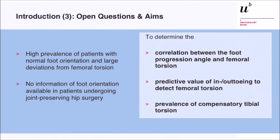We observed a high prevalence of patients with normal foot orientation but large deviations in femoral torsion in our outpatient clinic, and we could not find any reliable information on foot orientation in patients evaluated for joint-preserving hip surgery. The aims of this study were: to determine the correlation between the foot progression angle — the quantification of out- and in-toeing — and femoral torsion; to assess the predictive value of in- and out-toeing to detect femoral torsion as a clinical diagnostic sign; and to determine the prevalence of compensatory tibial torsion.